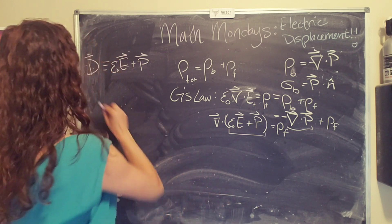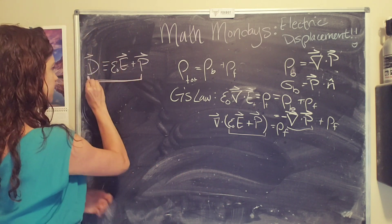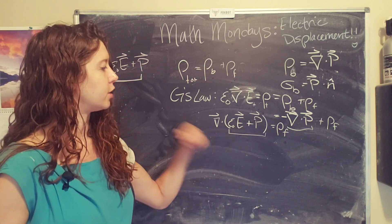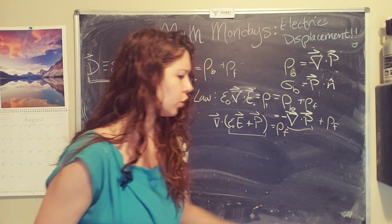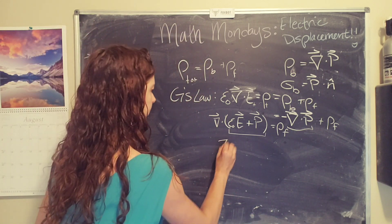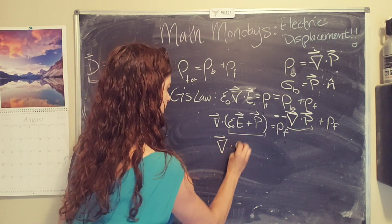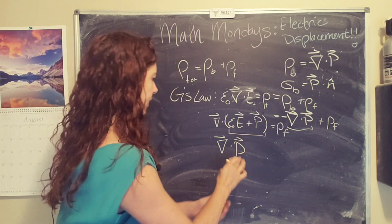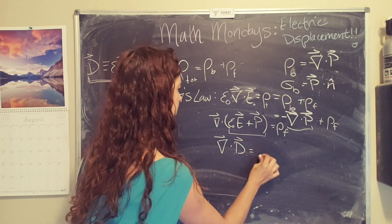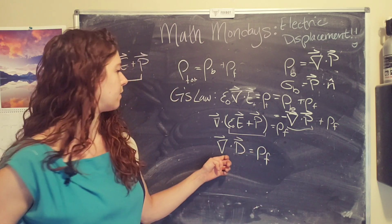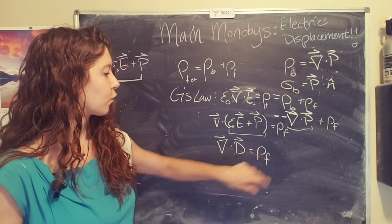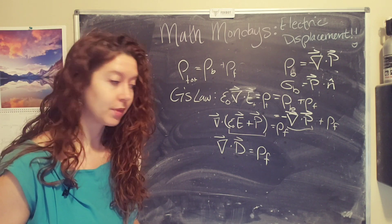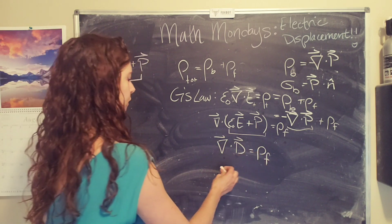So we just, this is where the electric displacement comes from, is the need to define a new quantity to replace this stuff in the parentheses. And then what we can do is we can simplify this equation. So we can read it a little bit better. So you have the divergence of the electric displacement equals the free charge density.